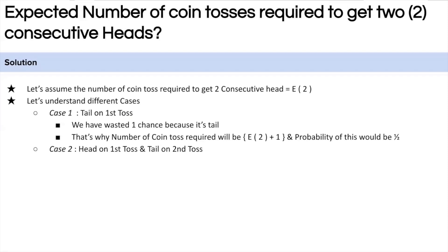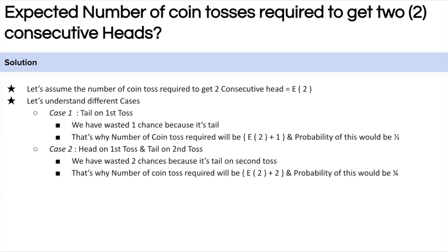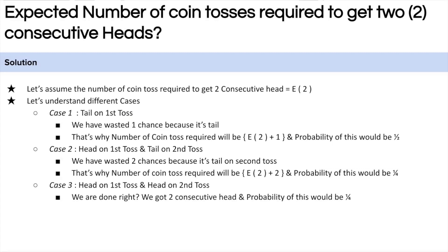In the second case, on the first toss we got a head, and on the second toss we got a tail. We have wasted two chances because the tail on the second toss has ruined the head we got on the first toss — we still need two consecutive heads. The expected number of tosses here is E(2) + 2, with probability 1/4. In the third case, we got two consecutive heads on the first and second toss — no further tossing needed. The expected number of tosses is two, with probability 1/4.